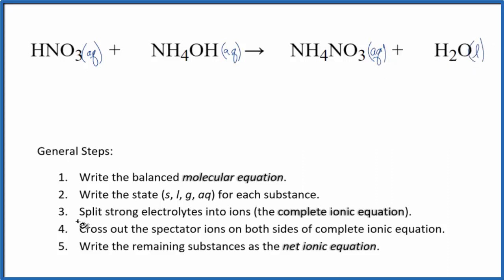So now we need to split the strong electrolytes into their ions for the complete ionic equation, also called the total ionic equation. Hydrogen is in group 1 on the periodic table. It has a 1 plus charge and this entire nitrate ion, polyatomic ion, 1 minus.